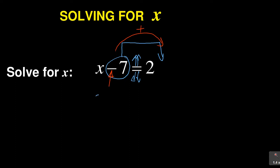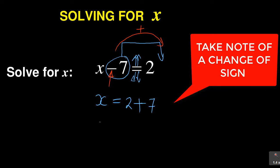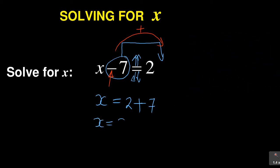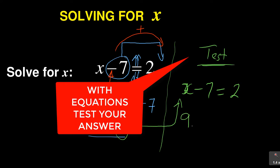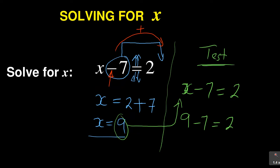So what you're going to have now is x is equal to two, but because seven was negative and it jumped the equal sign, it changes from negative to positive — so it becomes two plus seven. Your answer is x equals nine. You can always test your answer: the question was x minus seven equals two, and we said x is nine. Substitute: nine minus seven equals two, and two equals two. The left-hand side balances with the right-hand side, so x equals nine is correct.